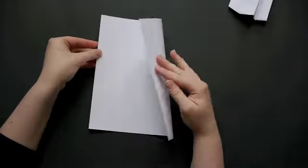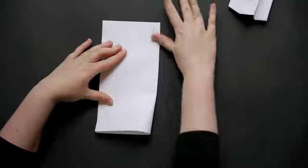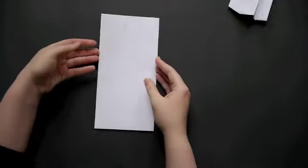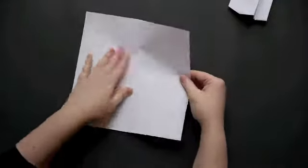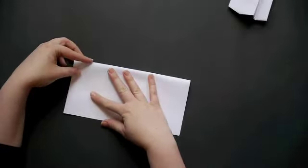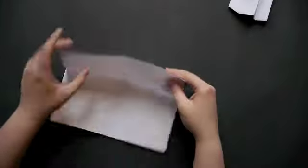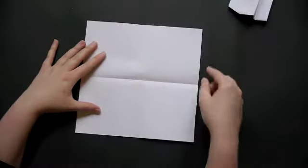Alright, I'm going to take my square piece of paper and fold it in half burrito style. Then unfold it and do the same thing in the other direction. Then unfold it again. What I want is a plus sign in the middle of my paper.